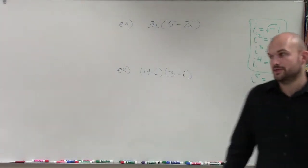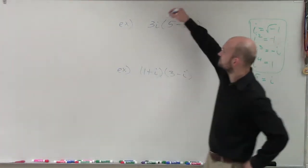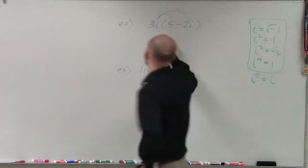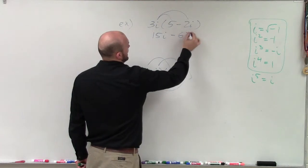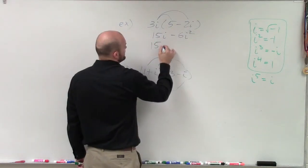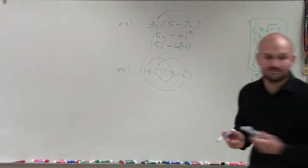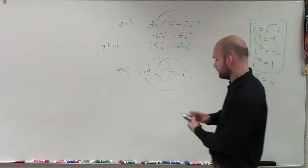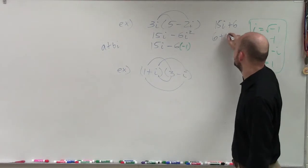Let's go through multiplication. For 3i times (5 minus 2i), we apply the distributive property and treat i just like a variable. That gives 15i minus 6i squared. Since i squared equals negative 1, we substitute: 15i minus 6 times negative 1. This becomes 15i plus 6. Writing in standard form a plus bi, the answer is 6 plus 15i.